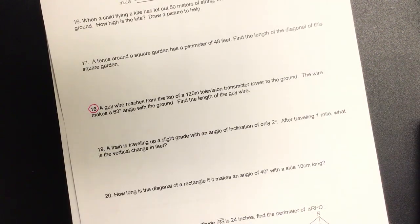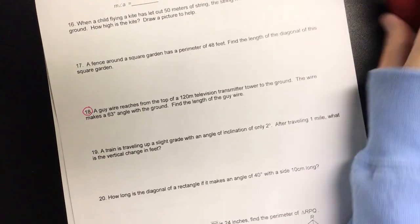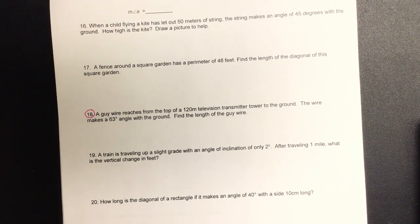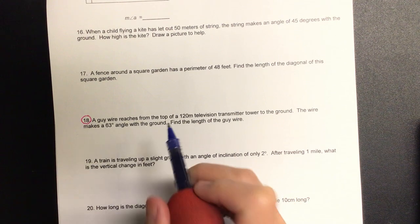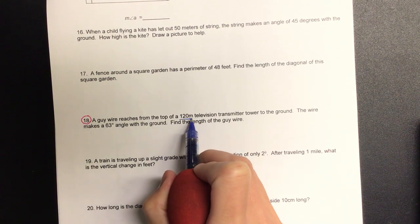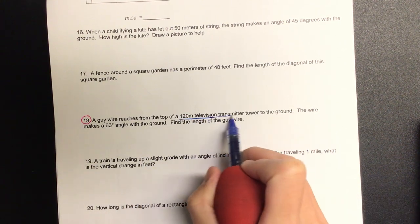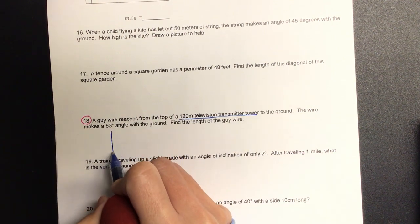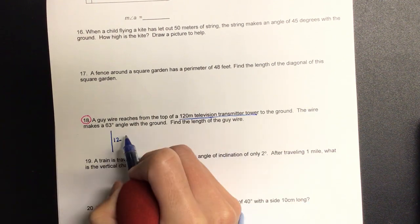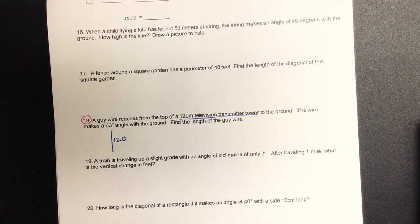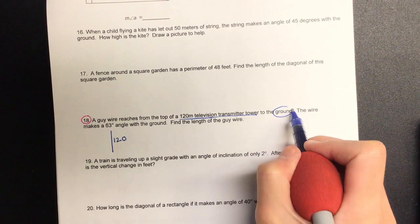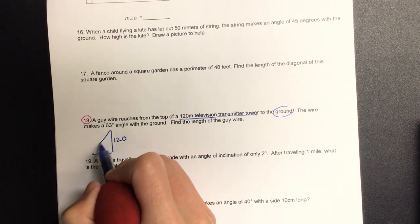Number eighteen. A guy wire reaches from the top of a one hundred twenty meter television transmitter tower to the ground. The wire makes a sixty-three degree angle with the ground. Find the length of the guy wire. Okay, I want to start with the tower. We have one hundred twenty meter tower, so that's going to be our vertical distance.